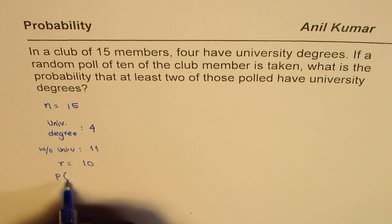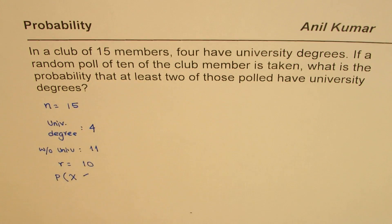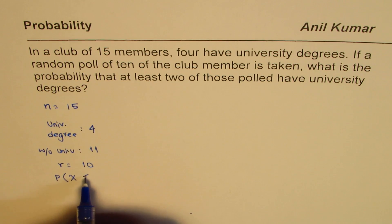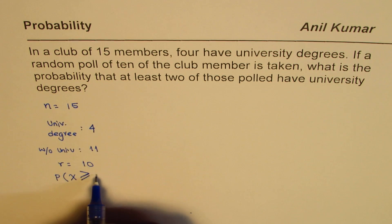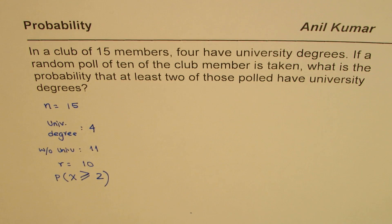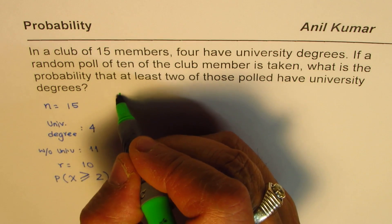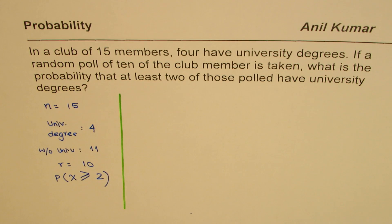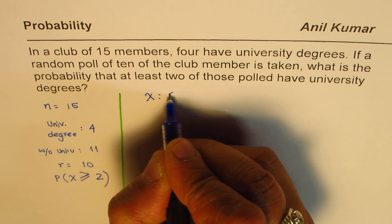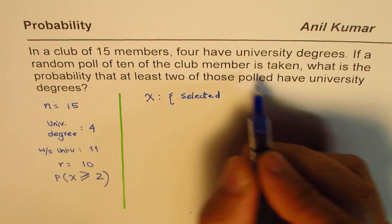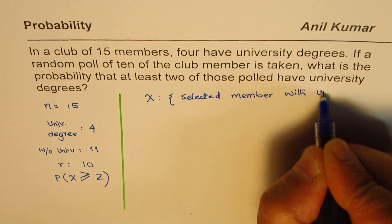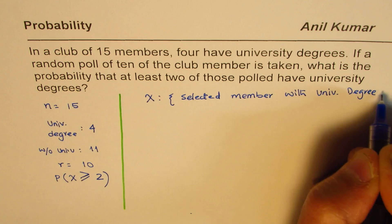We are looking for the probability where the random variable will be at least two of those polled having a university degree — that means two or more should have a degree. So X should be greater than or equal to two. We have defined the random variable as the selected or polled member with a university degree.